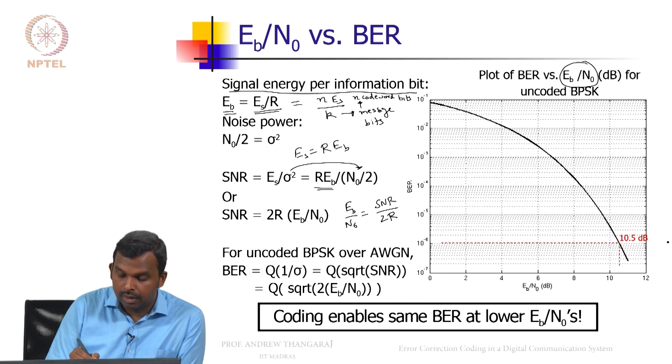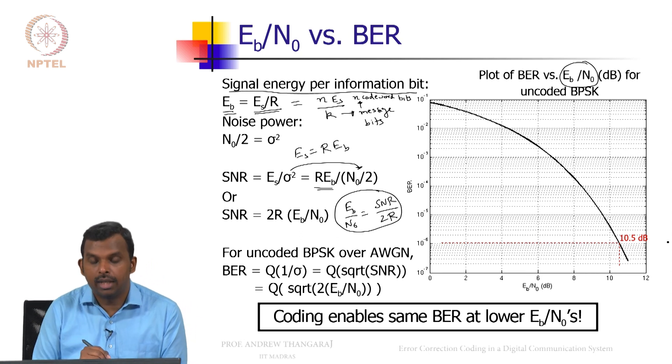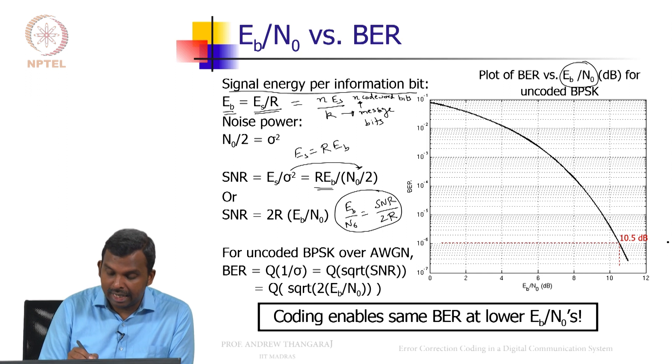This is the main result. You have to convert SNR into Eb over N0 by dividing by 2 times R.